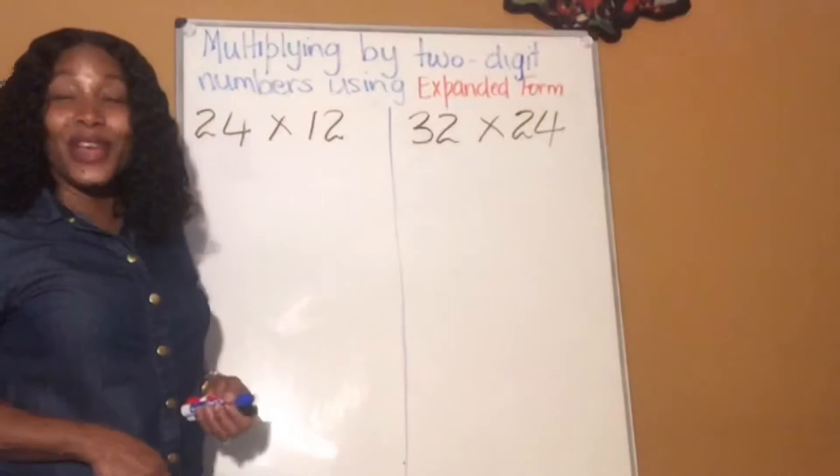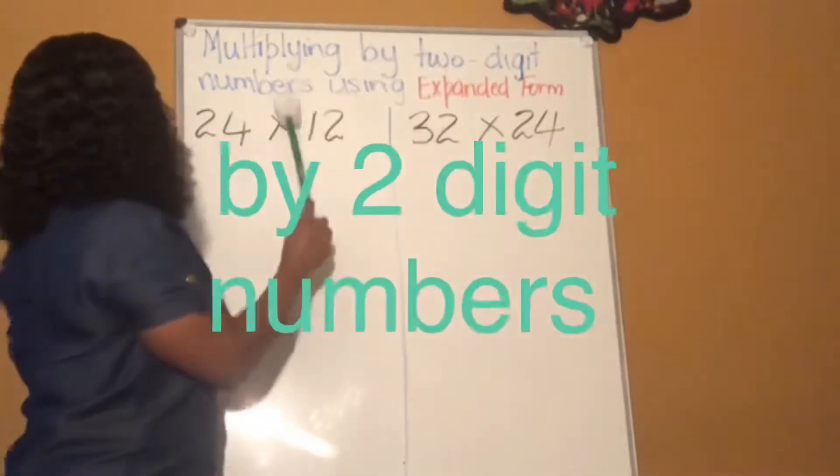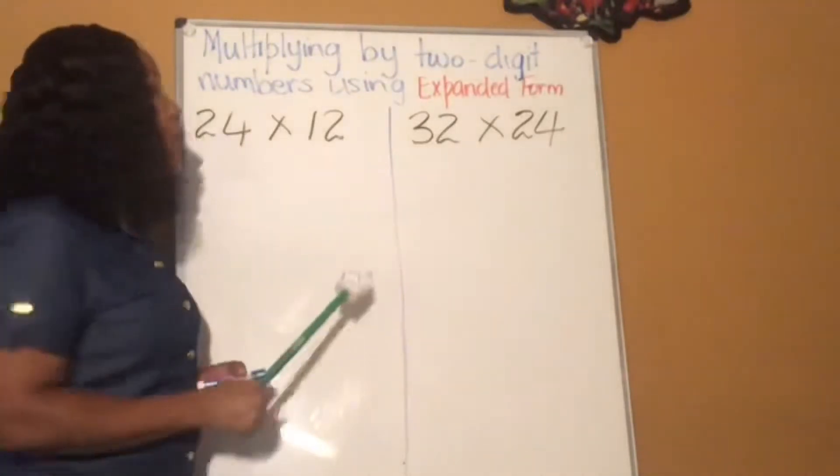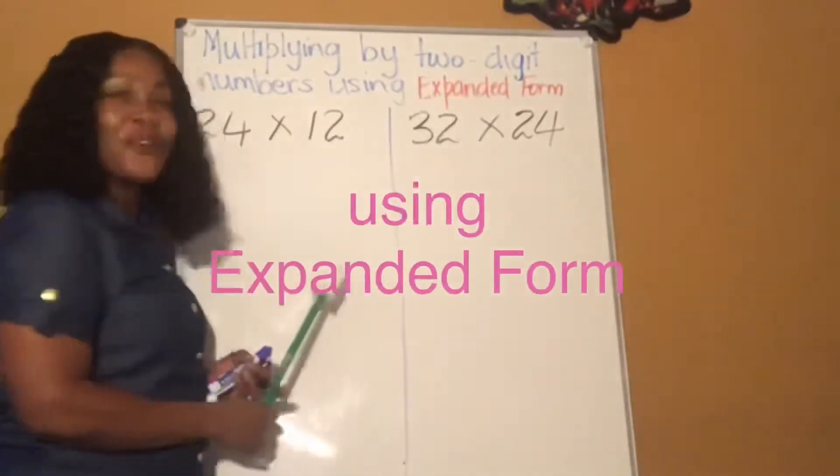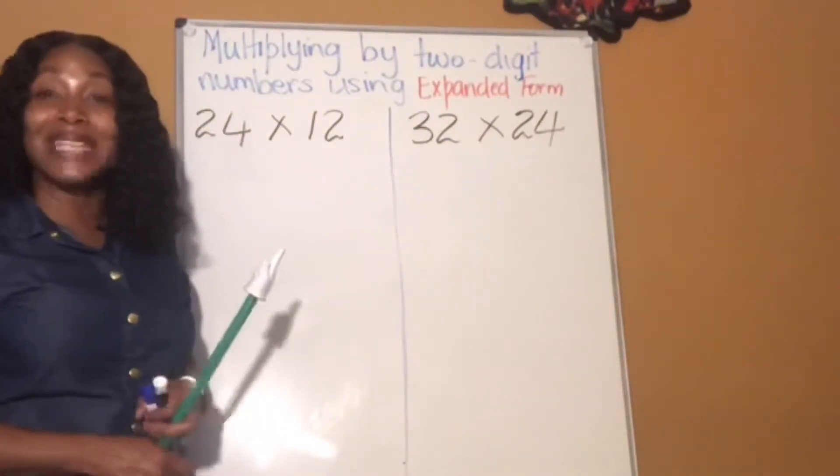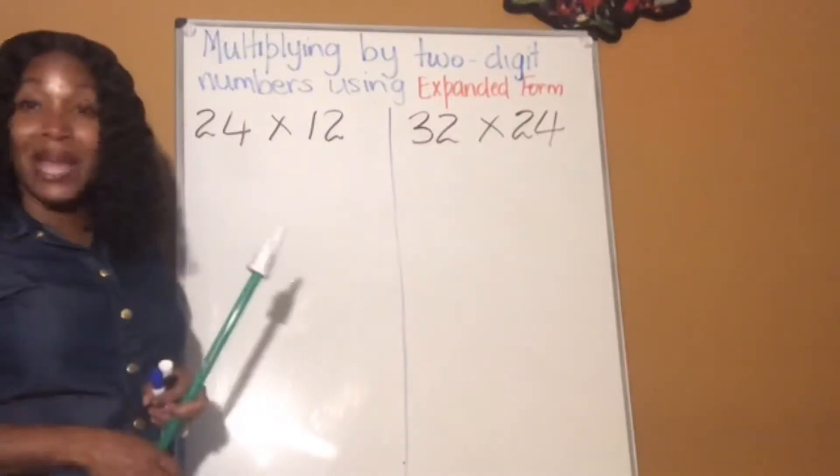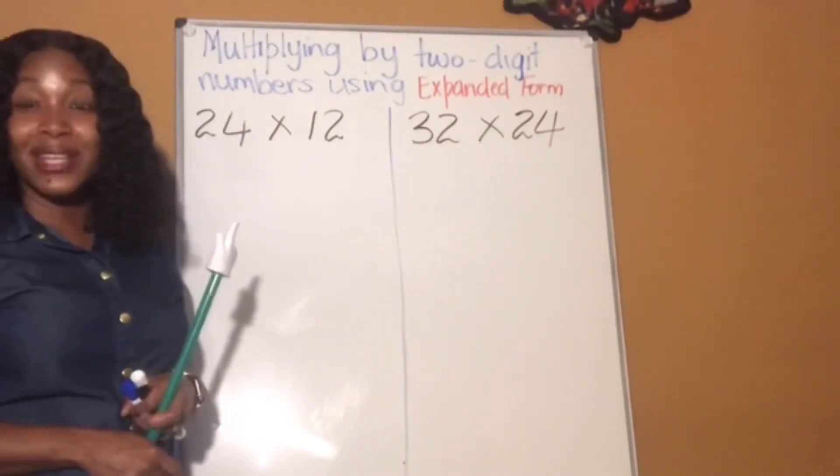Today, we are going to be looking at multiplying by two-digit numbers, but we're using expanded form. We used expanded form when we were multiplying by single-digit numbers. Today, we're going to look at it when multiplying by two-digit numbers.